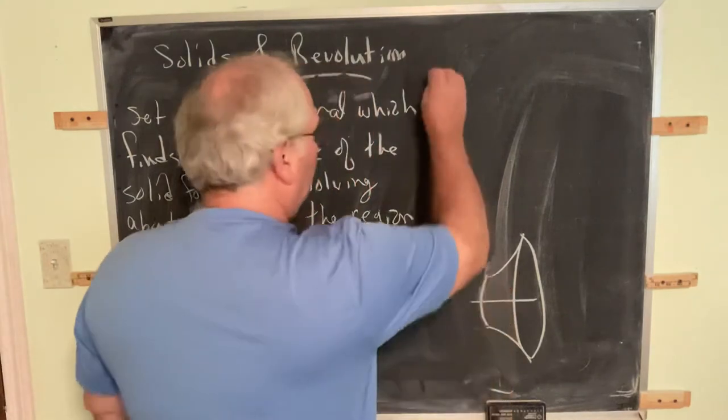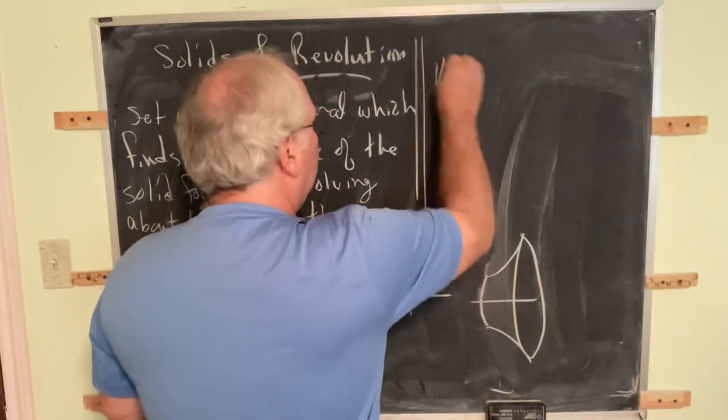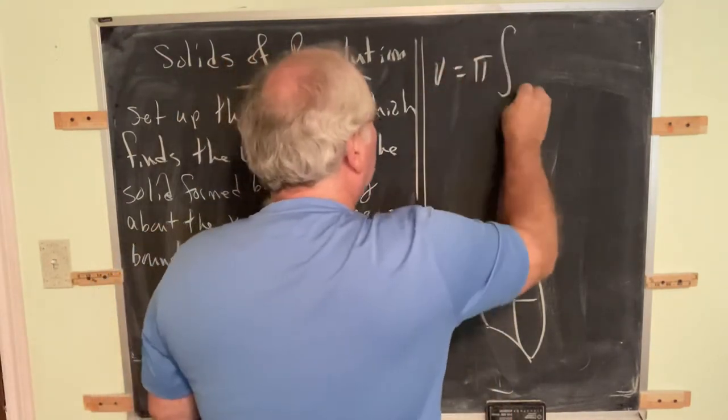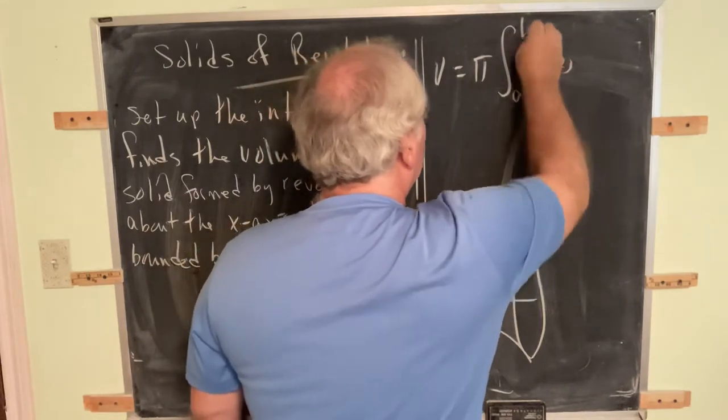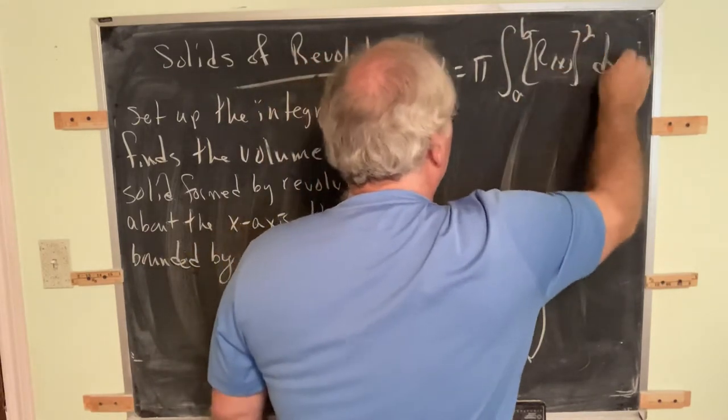Now, what is our volume? We know volume is pi times the integral from a to b of the radius function squared, dx.